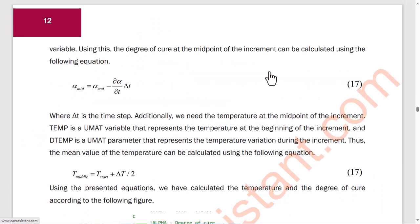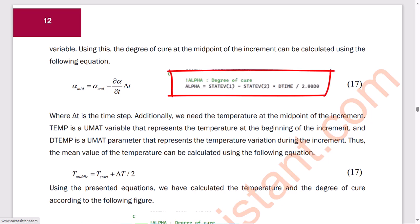Next, we define the parameters for the unrelaxed stiffness of the composite. To proceed, we needed to calculate the degree of cure. This value is calculated at the end of the increment and stored in the first state variable. However, we require its mean value at the midpoint of the increment, which can be derived. The rate of increment, stored in the second state variable, is used to calculate the degree of cure at the midpoint using the provided equation.